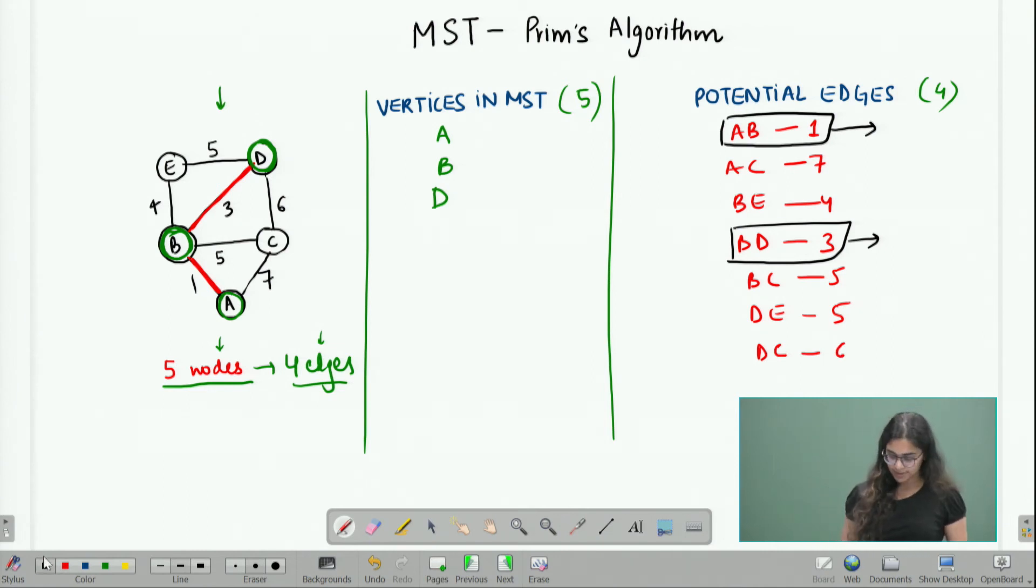Now, again I go back to my list and look for the edge with the minimum weight. Now, please note that in this case, the edge with the minimum weight is BE with weight 4. Till now, what was happening was whenever we add a new vertex, the next edge that we were adding was an edge that had that vertex as a part of one of its endpoints. But this does not always have to be the case. The last vertex that we chose was D and the next edge that we will be choosing is BE.